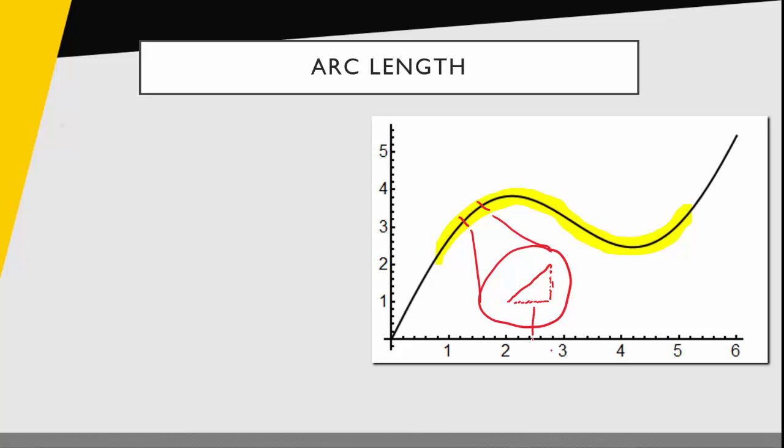And so if it's a line I can think of making a small little right triangle from that little line segment, where this section would be delta x, a small change in the x value, and this distance would be a small change in the y value.